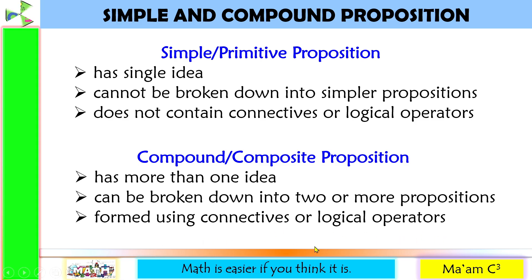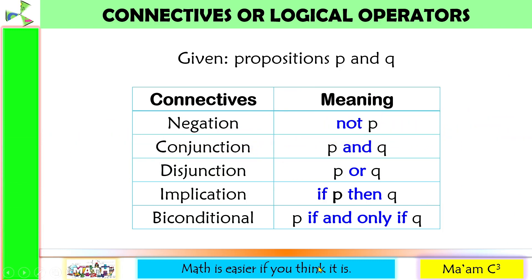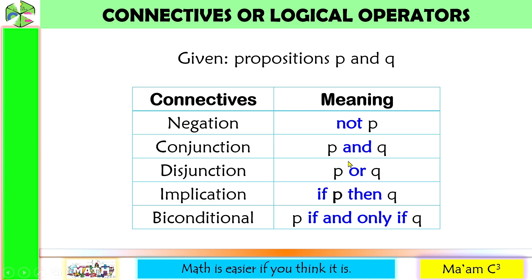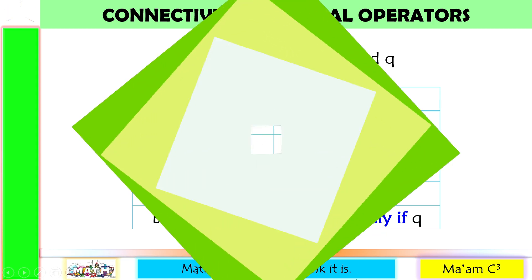The equivalent of connectives or logical operators in English sentences are conjunctions. Given the propositions P and Q, we have the following connectives: Negation, meaning 'not'; Conjunction, meaning 'and'; Disjunction, meaning 'or'; Implication, meaning 'if...then'; and Biconditional, meaning 'if and only if.'